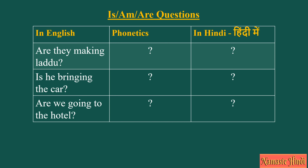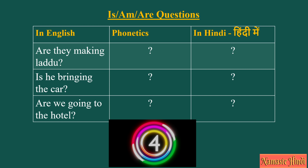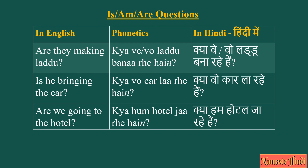Are they making laddu? Kya wo laddu bana rahi hain, or you can also say: Kya wo laddu bana rahi hain. Is he bringing the car? Kya wo kar la rahi hain. Are we going to the hotel? Kya hum hotel ja rahi hain.